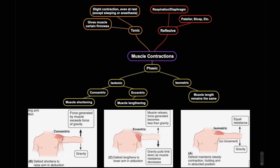Another kind is reflexive contraction. These are contractions that you have without even thinking about it. For example, your breathing — the muscles involved like your diaphragm — or your reflexes when you do the patellar or the bicep reflex. These are reflexive muscle contractions. They're automatic; you don't even think about them.